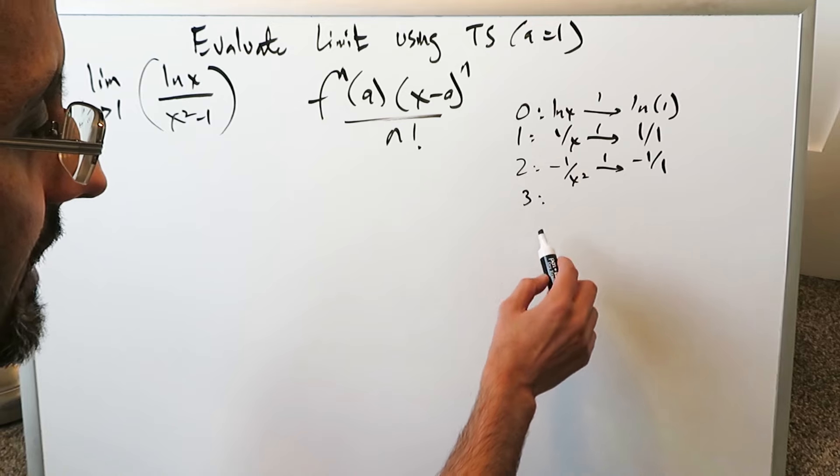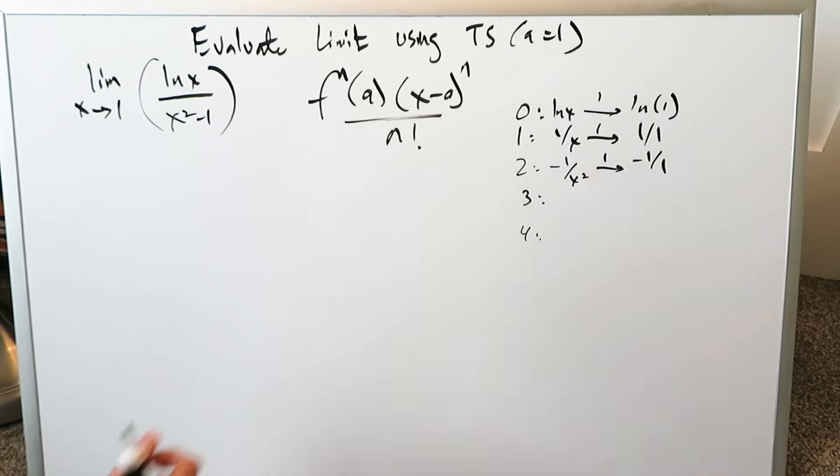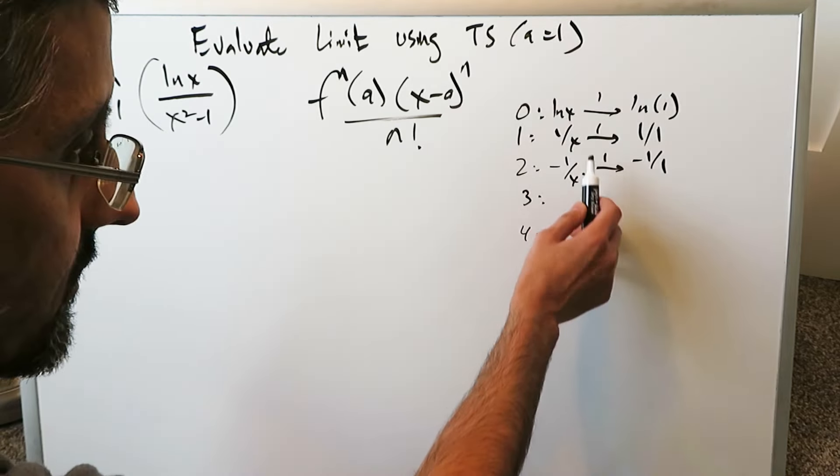The third order, and I think we can go up to fourth order derivatives. The third order will be 2 over x cubed. Just use the power rule and you can easily figure this out. This will be a 2 over 1. Lastly, the fourth order derivative you will have a minus 6 over x to the power of 4. You put 1 in here you're getting a minus 6 over 1. But let's simplify this.